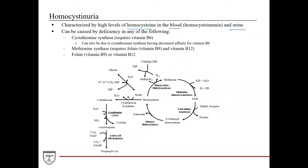Homocysteinuria is caused by a deficiency in potentially a number of things. First, it can be an inherited disorder where cystathionine synthase is deficient — the enzyme that converts homocysteine into cystathionine. It can also be due to a mutation causing decreased affinity for vitamin B6, since it requires B6 as a cofactor. You could also have a deficiency of vitamin B6 in a normal individual, which could potentially lead to this as well.